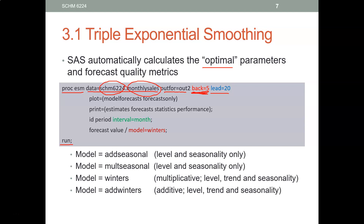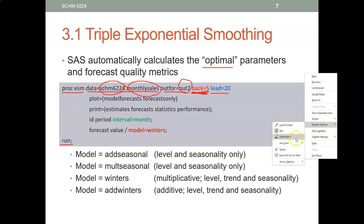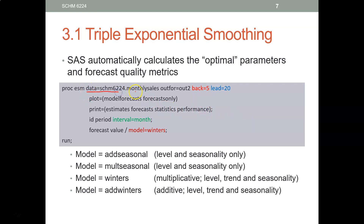OUT2 tells SAS where to write the forecasts. The forecasts are not in your original data set — you just have observations there. SAS will calculate 20 forecasts and put them in the SAS data set called OUT2. SAS will not use the last five observations when calibrating your model, and it will generate 20 forecasts written in this OUT2 data set.